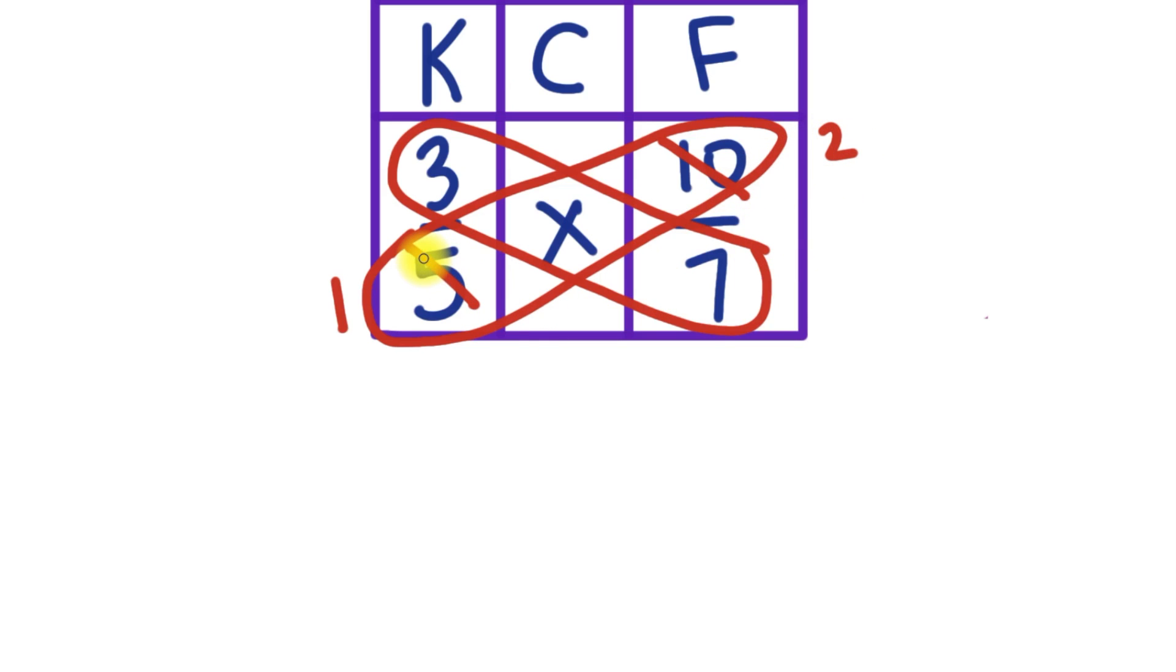So now here are our new fractions. We now have 3 over 1 times 2 over 7. Now because we cross canceled, we don't have to worry about reducing later on. We can just multiply the values. We've got 3 times 2, which is equal to 6, and 1 times 7, which equals 7.